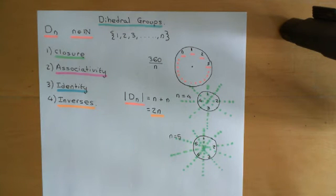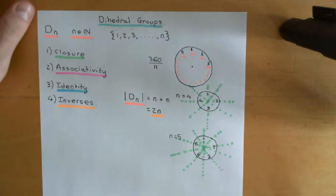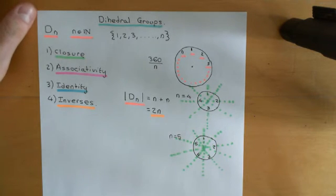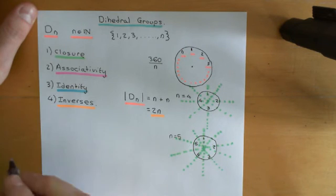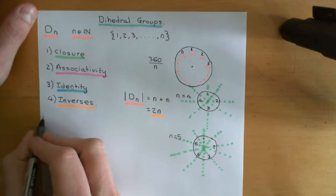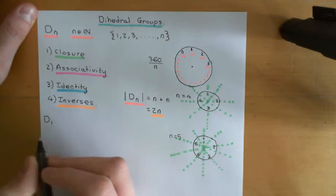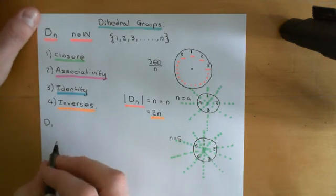To make this more concrete, we should do some examples. We'll start from the bottom and work up — we'll start with D1 and D2, which are a little bit trivial, then we'll get to D3 and D4, which will give us more insight.